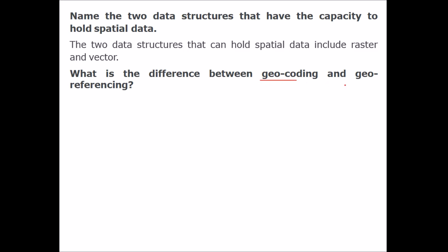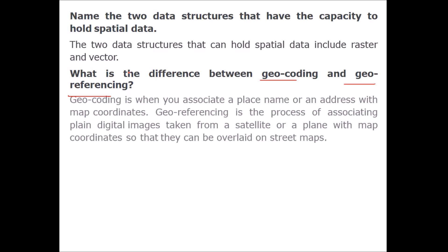What is the difference between geocoding and georeferencing? Geocoding is when you associate a place name or an address with map coordinates. Georeferencing is the process of associating plain digital images taken from a satellite or a plane with map coordinates, so that they can be overlaid on street maps, giving them spatial location or lat-long information.